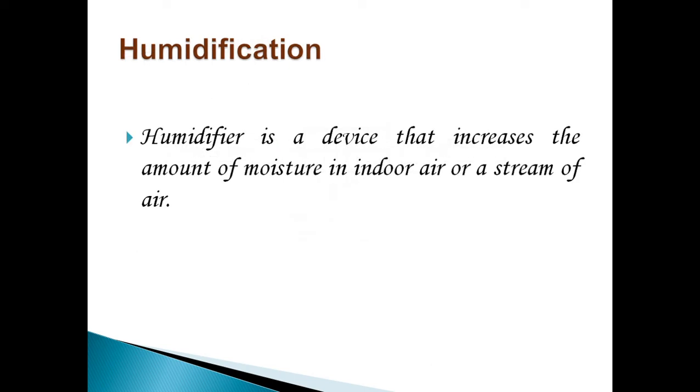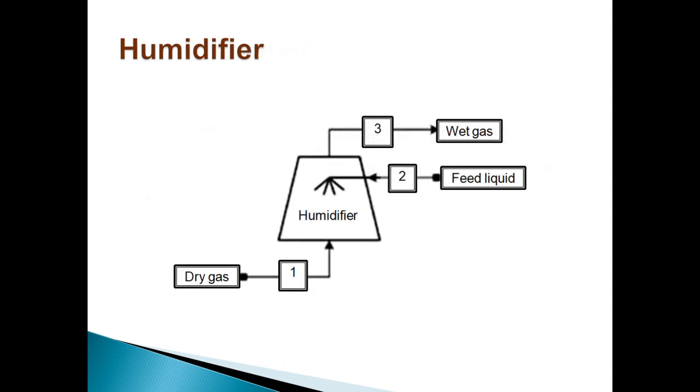Next, we come to humidification. Humidifier is a device that increases the amount of vapor in indoor air or any stream of air. As shown in figure, this operation takes place by allowing water to evaporate from a pan or a wetted surface or by circulating air through an air washer compartment that contains moisture.